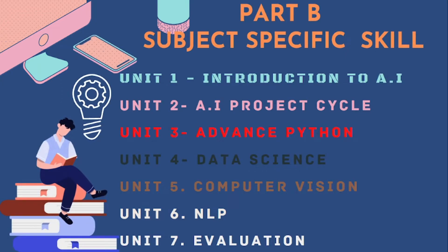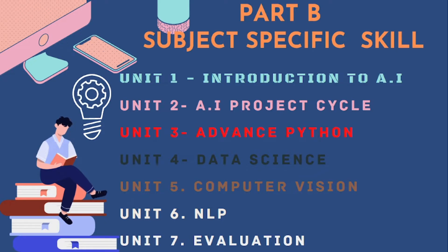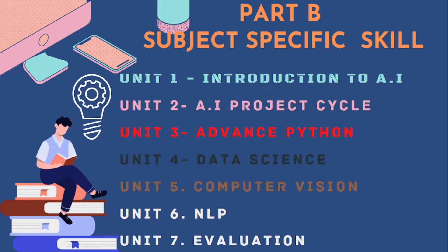Part B is Subject Specific Skill. Unit 1 is Introduction to AI, covering Fundamental Concepts of AI and Basics of AI. Unit 2 is Artificial Intelligence Project Cycle, covering Problem Scoping, Data Acquisition, Data Exploration, Modeling, and Evaluation — these 5 steps form the AI Project Cycle.